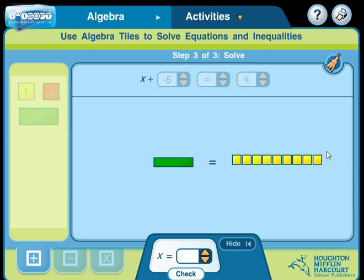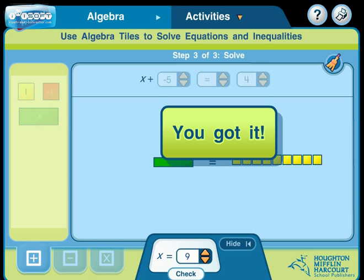So now let's count up how many tiles we have. x is going to be equal to whatever we have over here, which is 1, 2, 3, 4, 5, 6, 7, 8, 9. And the answer should be 9. Check. And we are correct.